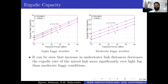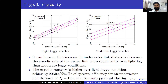For ergodic rate, we compare two terrestrial foggy conditions: light foggy weather and moderate foggy weather. We increase the distance for the second link while the first link distance is fixed. Ergodic capacity is high under light foggy conditions, achieving 20 bits per second per hertz of spectral efficiency for an underwater link distance d₂ = 10 meters and transmit power of 30 dBm.